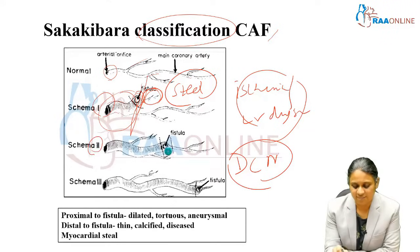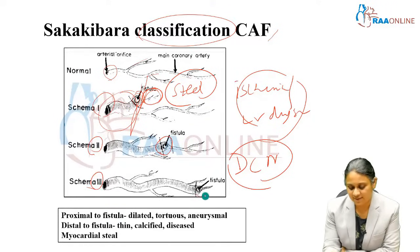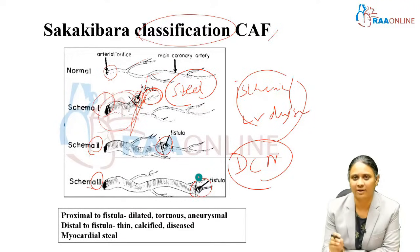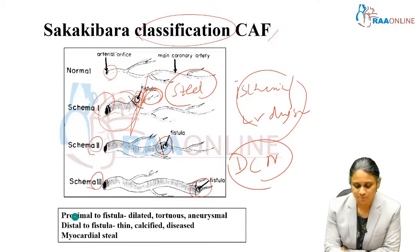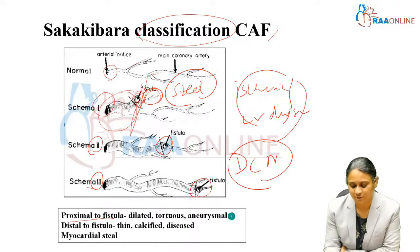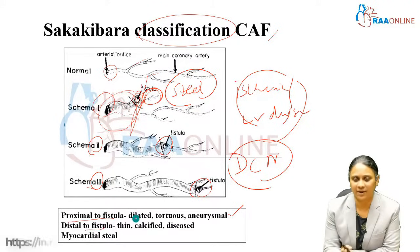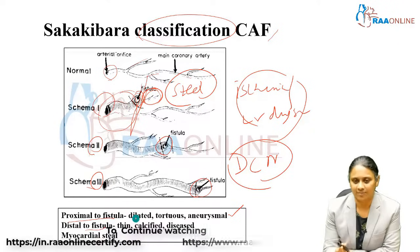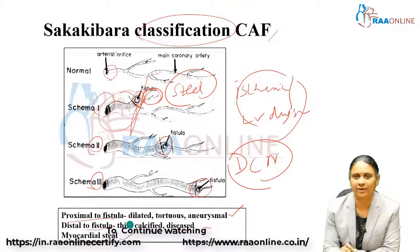The second schema involves the mid portion of the feeding vessel, and the third schema involves the distal portion — these are the potential targets for closure, either by ligation or device closure. Proximal to the fistula, vessels are dilated, tortuous, and aneurysmal, handling large volumes. Distal to the fistula, blood is stolen away, leaving thin, calcified, diseased, or atherosclerotic vessels with evidence of myocardial ischemia.